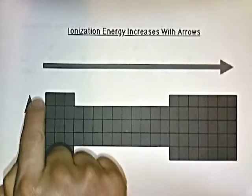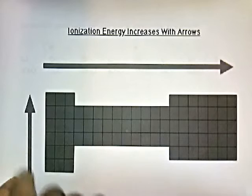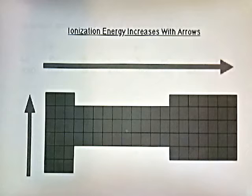Here's a mock-up of a periodic chart. As you go from left to right, radius decreases but ionization energy increases. Likewise, if you go up the chart, the radius decreases, but as radius decreases, ionization energy increases. A small radius means the electrons are held tightly, so it's going to take a lot of energy to rip those electrons off.